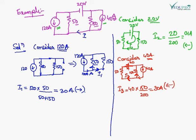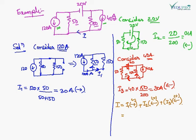Now it is time to calculate the total current. I equals I1 plus I2 plus I3. I1 is flowing this way, I2 is flowing this way, and I3 is flowing this way. The result will include plus 0.1 Ampere, meaning current will flow this way with a magnitude of 0.1 Ampere.